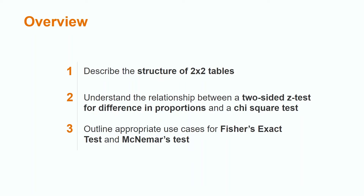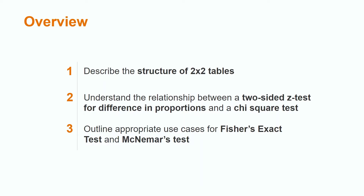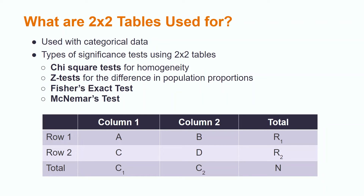In today's lesson, we are going to discuss the structure of two-by-two tables, the relationship between a two-sided z-test for difference of proportions and a chi-square test for homogeneity, and when to use Fisher's exact test and McNemar's test.